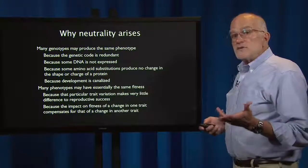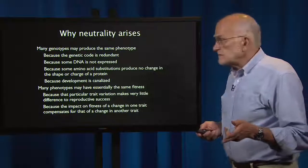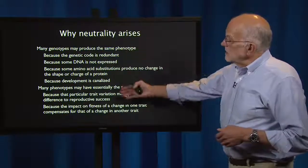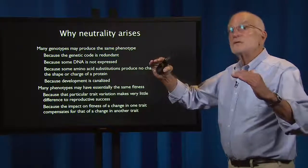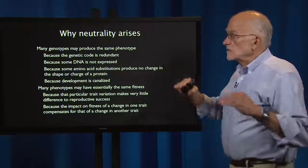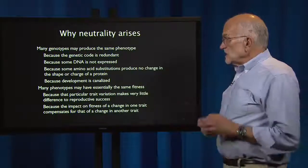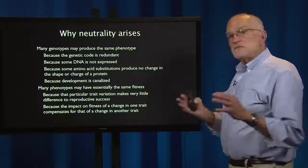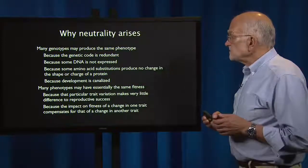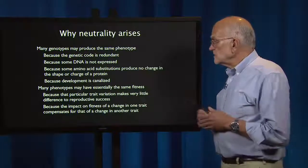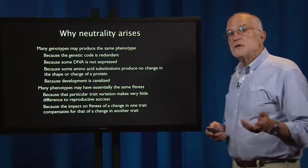The other major reason is that many phenotypes may have essentially the same fitness. So even if you produce a phenotype, there is still another level at which randomness or neutrality can arise — either because a trait is varying in a way that makes very little difference to reproductive success, or because the fitness impact of a change in one trait compensates for that of a change in another.